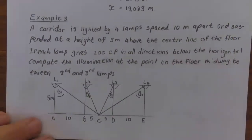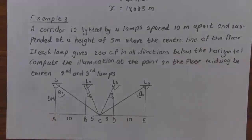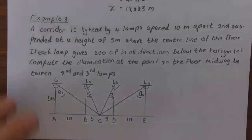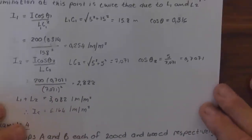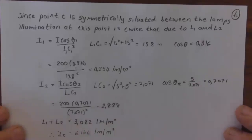Example 3: A corridor is lit by four lamps spaced 10 m apart and suspended 5 m above the centre line of the floor. Each lamp gives 200 candle power in all directions below the horizontal. Compute the illumination at the point on the floor midway between the second and third lamp. Since point C is symmetrically placed, illumination at this point is twice that due to lamps one and two, so I₁ = I·cos(θ₁)/L_C1².